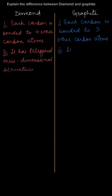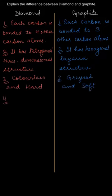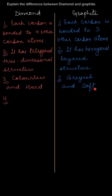Graphite has a hexagonal layered structure. Due to this, diamond is colorless and hard, and graphite is grayish and soft. Diamond appears colorless and is the hardest naturally occurring substance, whereas graphite is grayish in color and very soft.